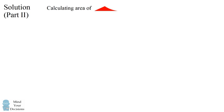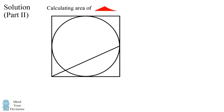To do that, we'll consider a simplified diagram. We'll just consider one of the circles, and it'll be inside of a square with side length 10.